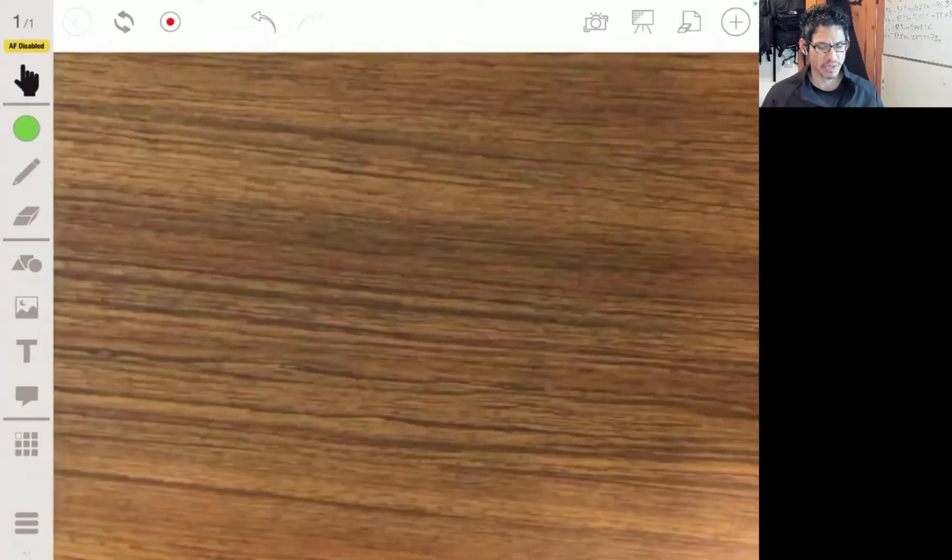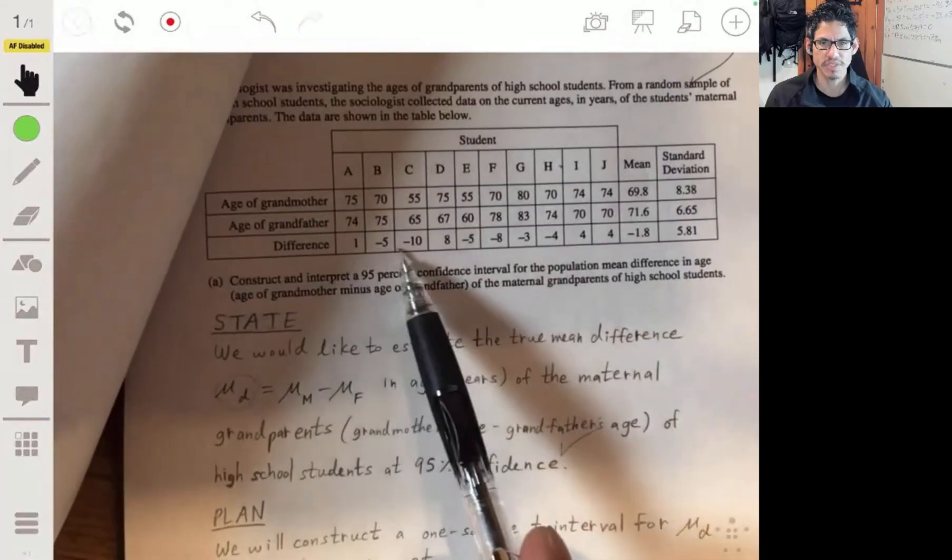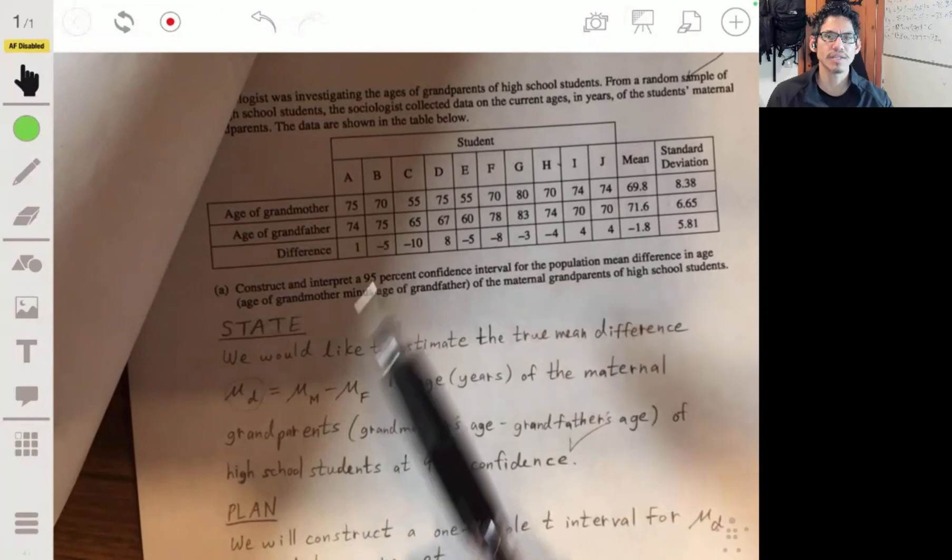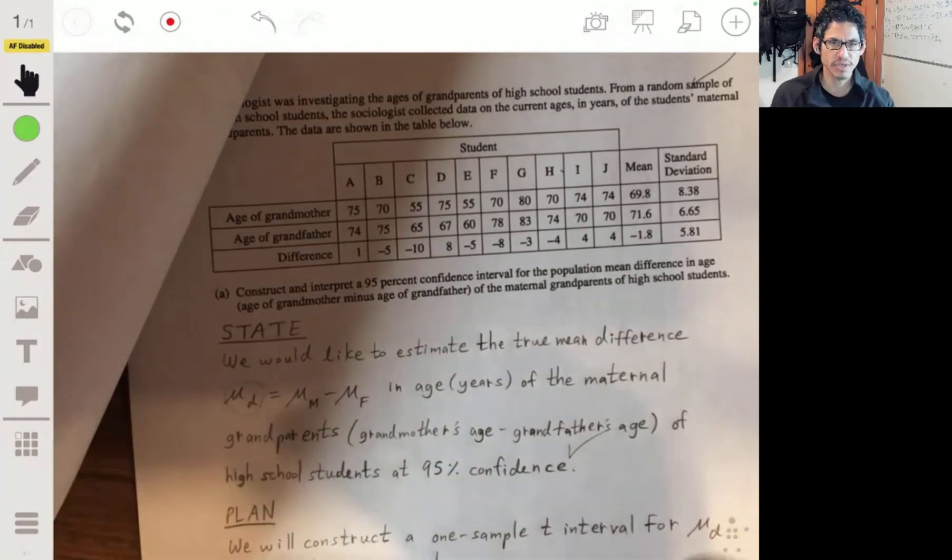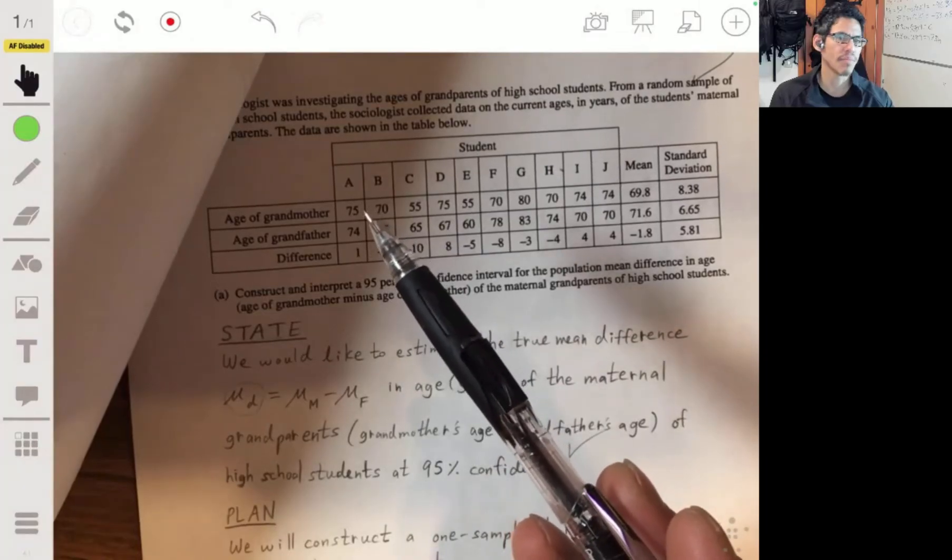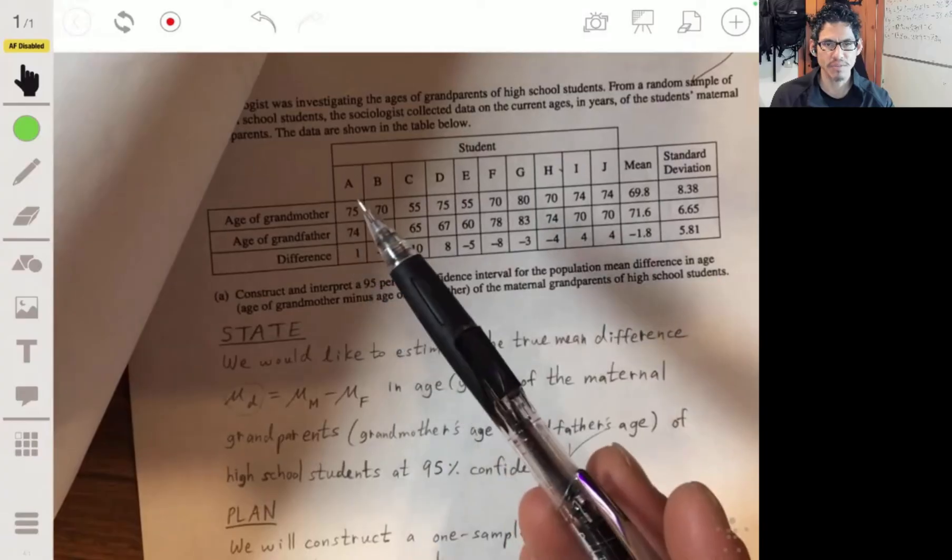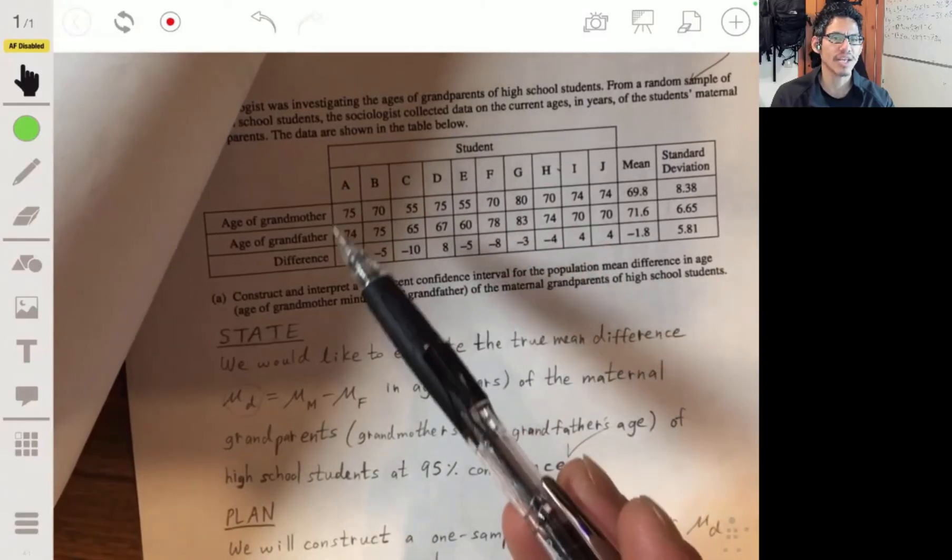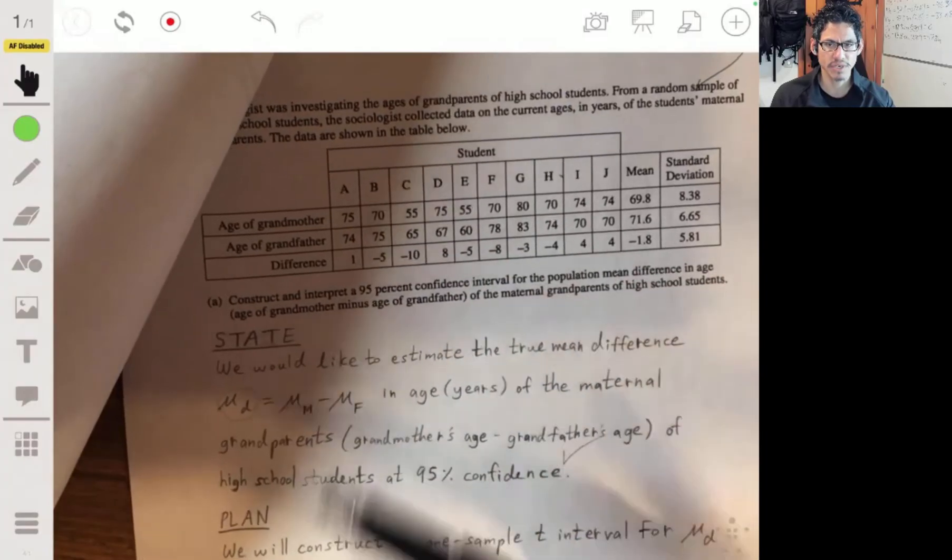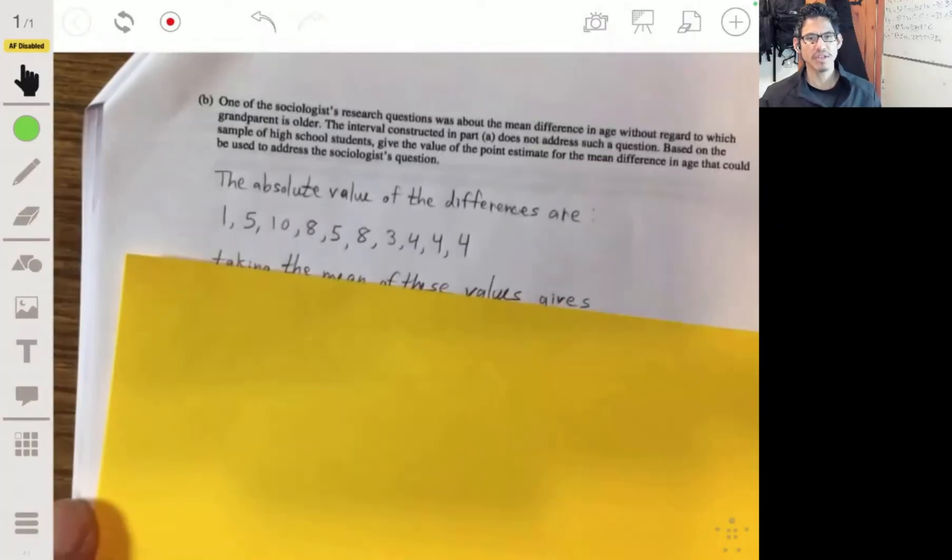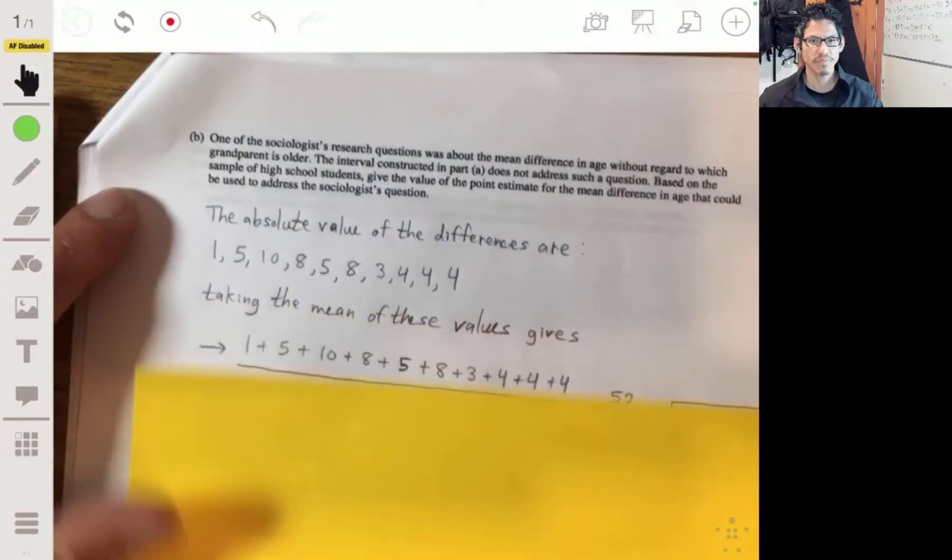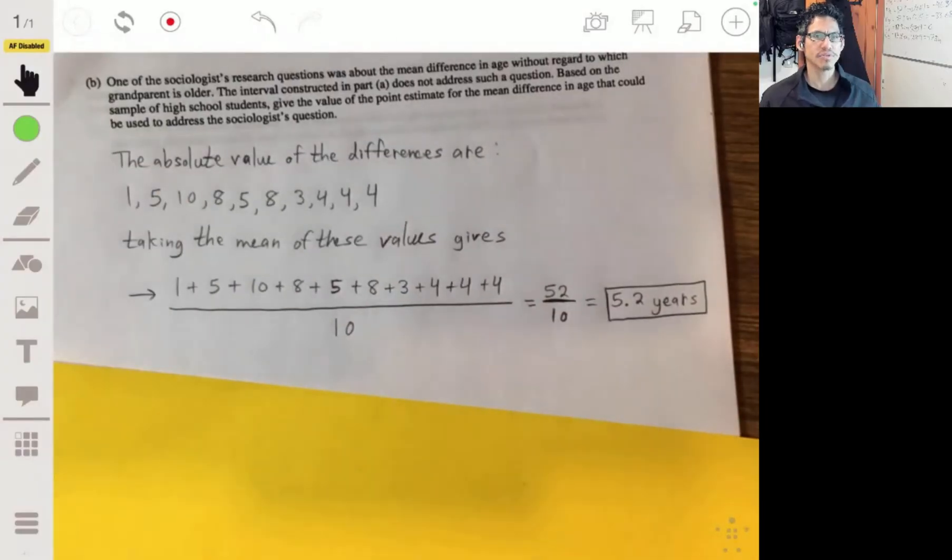Okay, so the way you can go about this is just look at the absolute value of the difference. So if you just go to the differences, in their case they don't want you to necessarily care if it's grandma minus grandpa or grandpa minus grandma. They just want to know how far apart are they in years. What's their difference? So you just take the absolute values of these numbers here. Then you just find the mean absolute value.